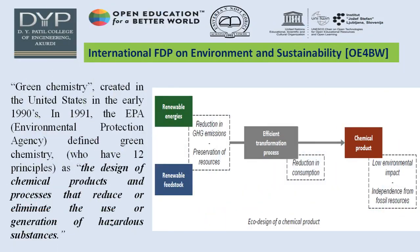Green chemistry is not just a definite solution but an ultimate necessity. Green chemistry was created in the United States in the early 1990s. In 1991, the Environmental Protection Agency defined green chemistry as the design of chemical products and processes that reduce or eliminate the use or generation of hazardous substances. The green chemistry diagram shows: renewable energy, renewable feedstock, reduction in GHG emissions, prevention of resources, efficiency transformation process, reduction in consumption, and chemical products — representing the eco-design of chemical products.